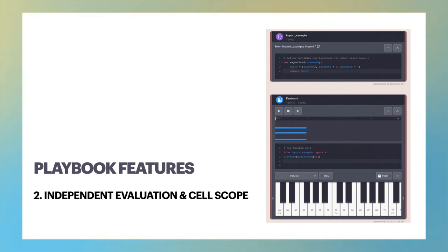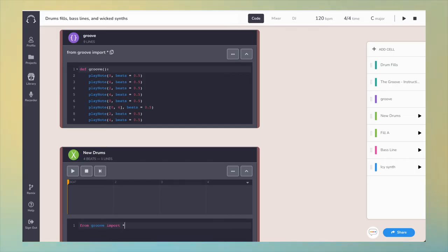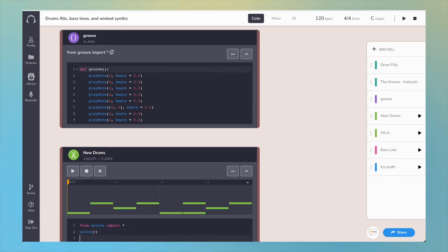If a cell redefines variables or functions, those changes are local to that cell. The implication of this architecture is that there is no need for a shared kernel or locally installed client-server software. In addition, dependencies between cells become explicit.